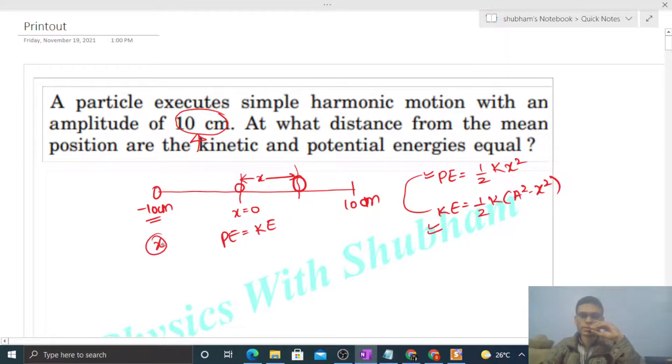You see, half of k into x squared equals k by 2, a squared minus x squared. So here k by 2 cancels. So twice of x squared is equal to a squared.